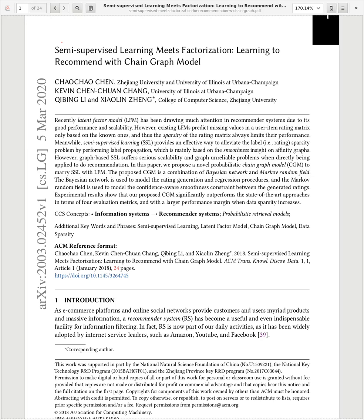In this paper, we propose a novel probabilistic chain graph model to marry SSL with LF, semi-supervised learning with latent factor models. The proposed chain graph model is a combination of Bayesian network and Markov random field. The Bayesian network is used to model rating generation and regression procedures. And Markov random field is used to model the confidence-aware smoothness constraint between the generated ratings. Experimental results show that our proposed chain graph model significantly outperforms state-of-the-art approaches in terms of four evaluation metrics with a larger performance margin when the data sparsity increases.